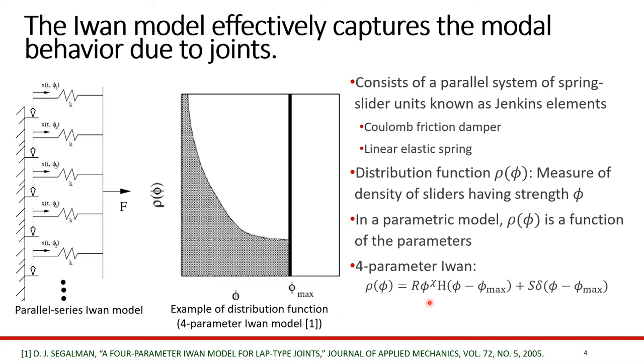For example, if you look at the four parameter I1 model, one that is commonly used in bolted joints dynamics, ρ(φ) is defined in terms of the four parameters r, chi, phi max, and s, resulting in a distribution function with power law behavior.